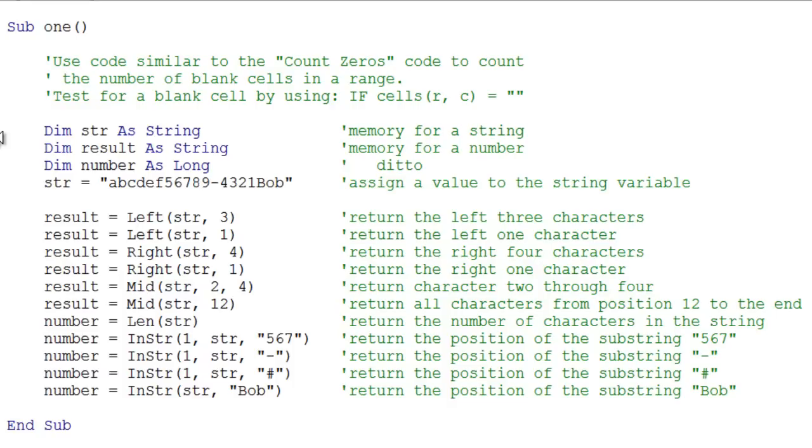First thing you'll notice here is I declared a variable to store a string. I've declared another variable to store the result from our string functions. And a third variable here just to store a number which we're going to see down below from our string functions. This next line actually stores the string into memory. It's just a random string here with a bunch of letters and numbers and so on.